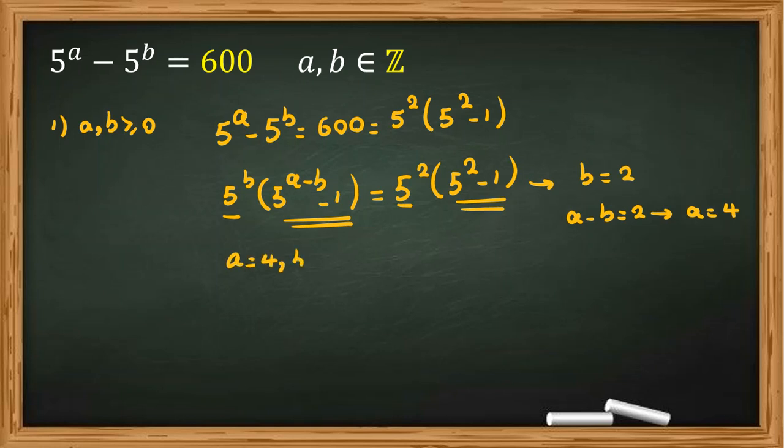A is 4, B is 2. And we want to prove we don't have any other answer except this A equals 4, B equals 2. Second case, if one of them be negative - one of them be negative, one of them positive.